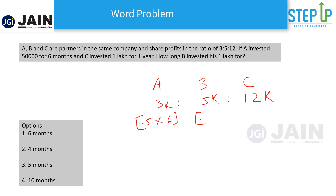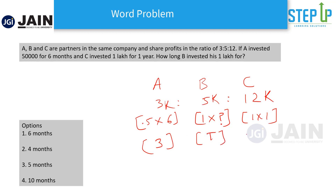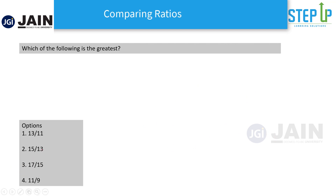So for A: 0.5 × 6 = 3, which corresponds to 3 in the ratio. For C: 1 × 12 = 12, which corresponds to 12 in the ratio. That means for B, 1 × K must equal 5, so K is 5 months. B invested his 1 lakh for 5 months. Let's now move to the concept of comparing ratios.